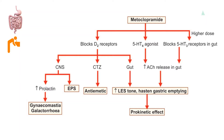By blocking D2 receptors, metoclopramide acts on the CNS, increases prolactin release, which may lead to gynecomastia, galactorrhea, and extrapyramidal symptoms. Through the chemoreceptor trigger zone, it prevents emesis and is useful as an antiemetic. In the gut, it increases lower esophageal sphincter tone and acts as a gastric hurrying agent, making it a prokinetic.